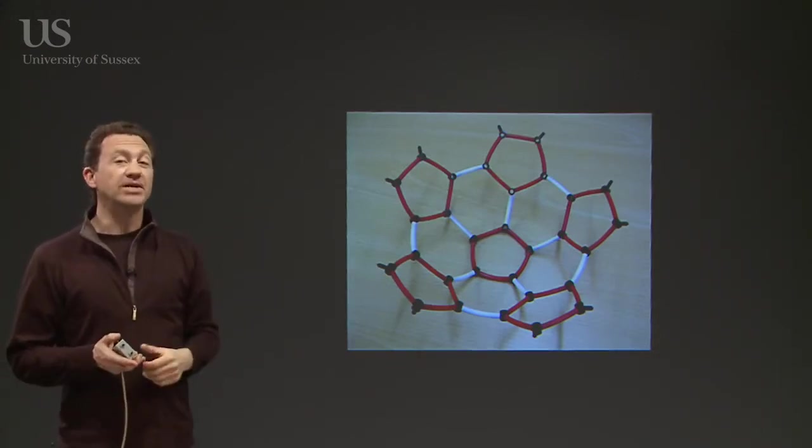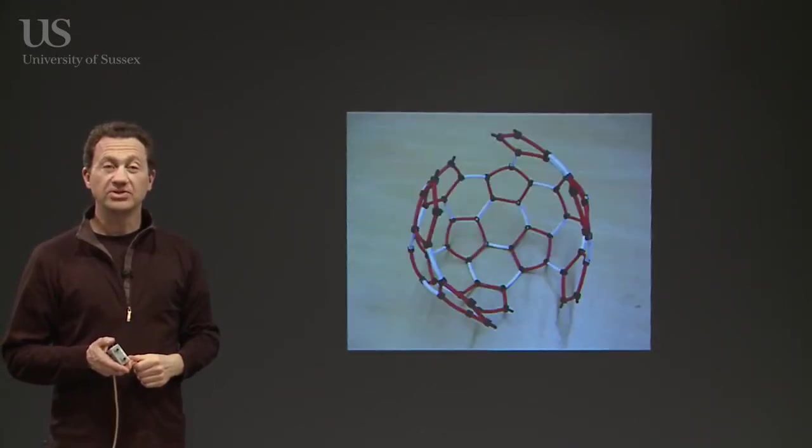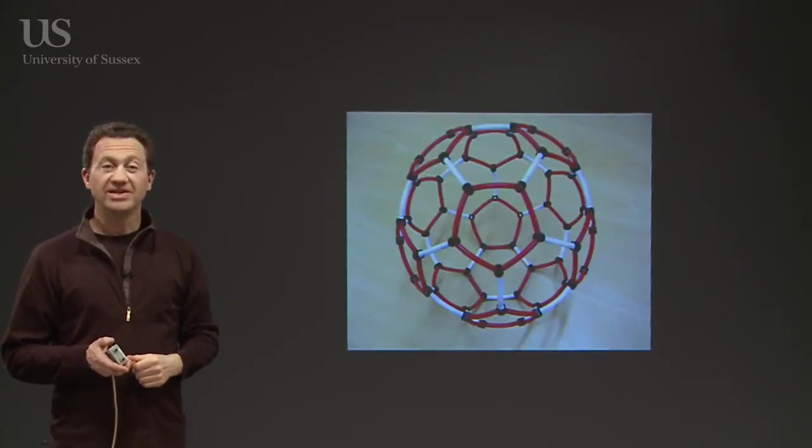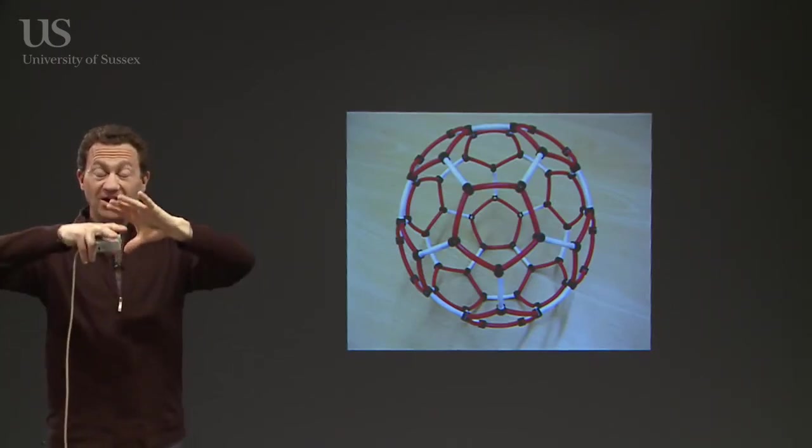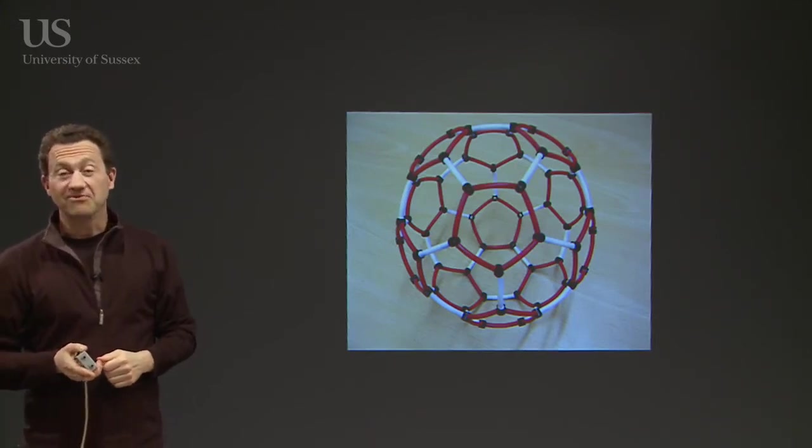So that's half a buckyball. We make another half and then simply join these together with the white straws. As we zip the whole thing up, you'll see that you form a round, beautiful molecular model of C60 in front of your eyes.